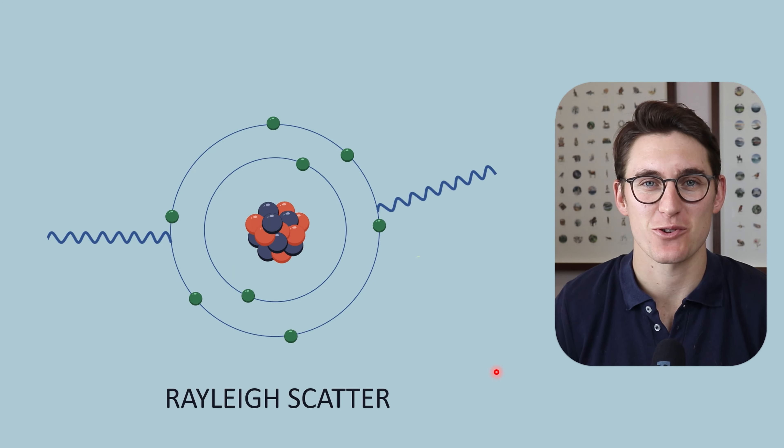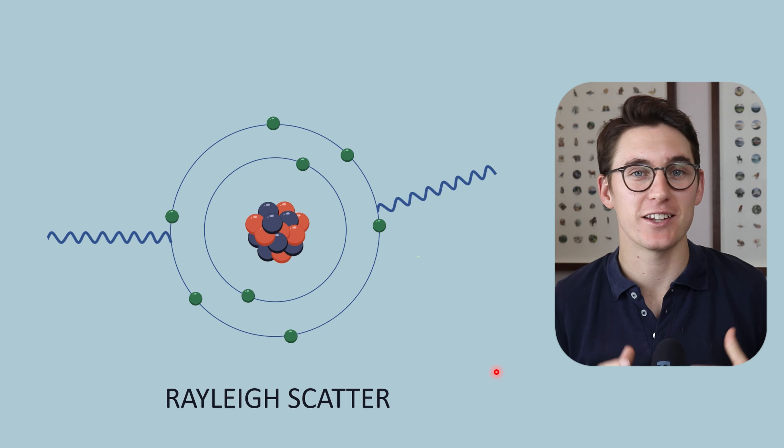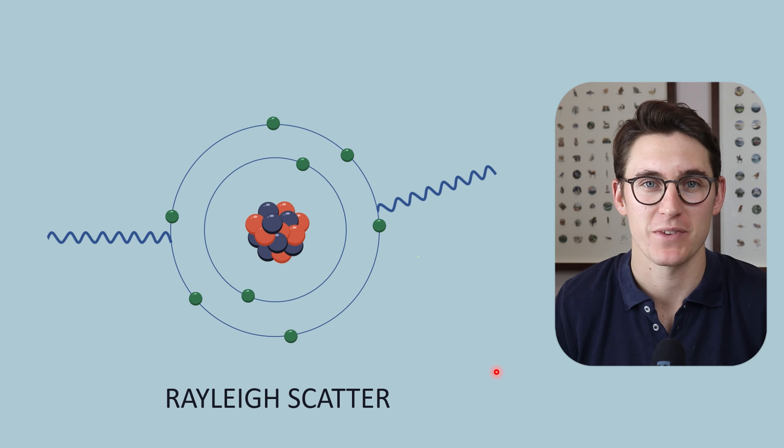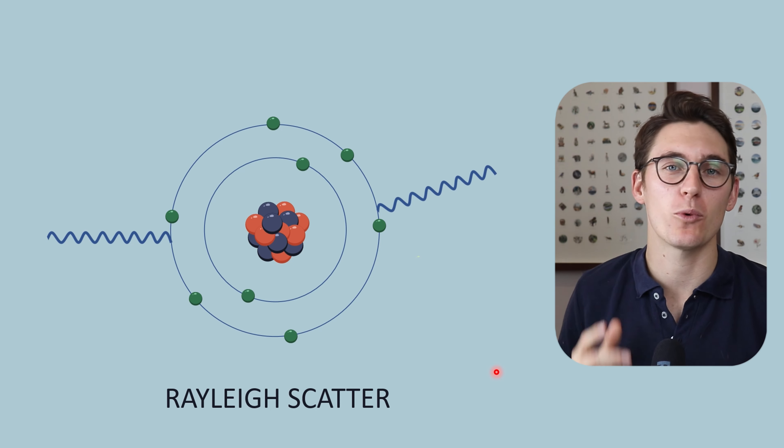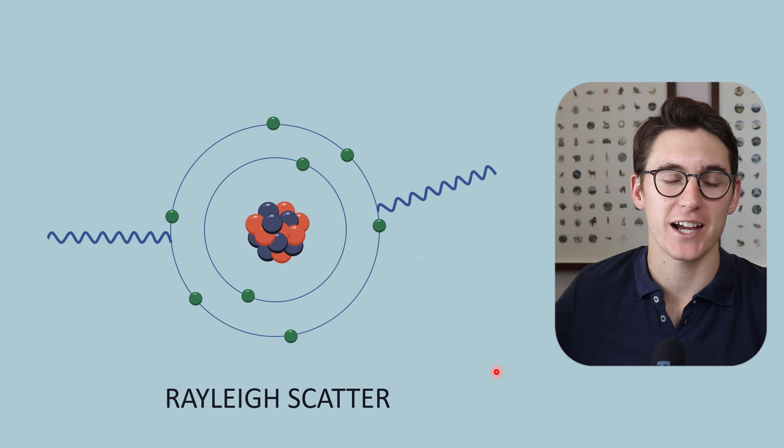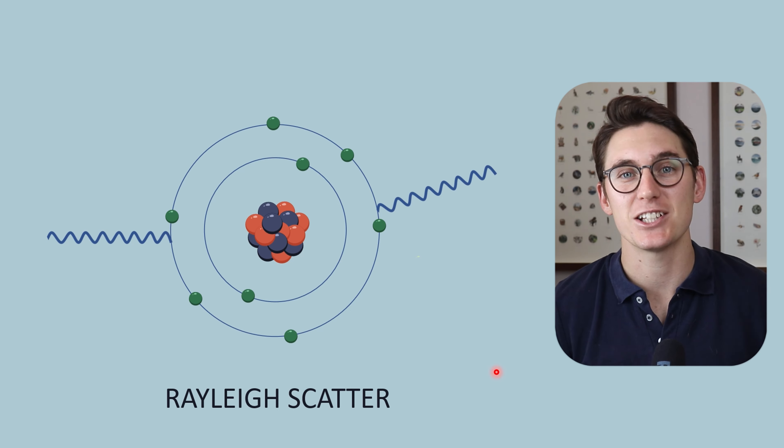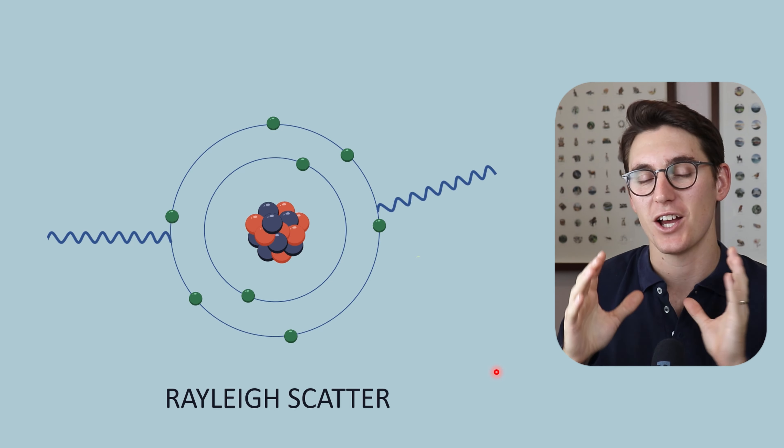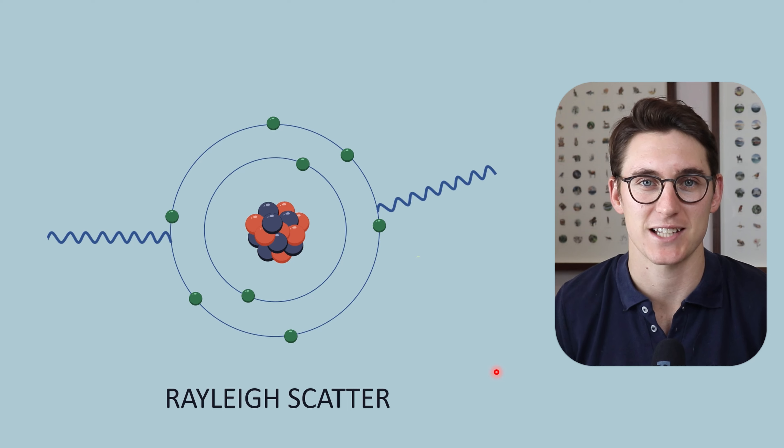So let's look at our final x-ray interaction with matter mechanism, Rayleigh scatter. You may hear this called elastic scatter or coherent scatter. They're all synonyms for the same event. You may also hear of one more x-ray interaction known as pair production, which happens at much higher energy ranges than our diagnostic energy ranges. I will touch on pair production later in our nuclear medicine module. But for now I want to keep it at photoelectric effect, Compton scatter, and Rayleigh scatter.